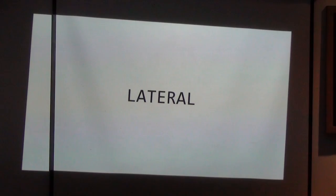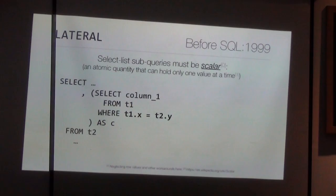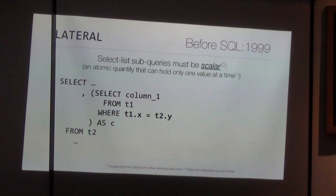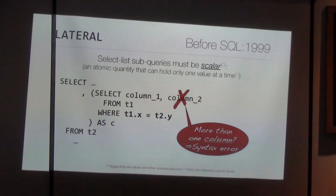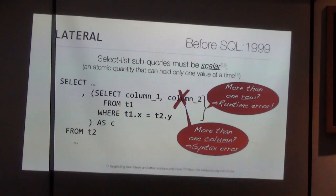To explain what it solves, I will first show you the problem. What I have here is a so-called scalar subquery — that means it's a subquery in the select list. Scalar subqueries, as the name suggests, have to be scalar, meaning they can return only one cell: one column and one row. That's fine. However, if you select a second column, you will get a compile-time error. And if you happen to select more than one row by accident, you will get a runtime error, which is even harder to find.